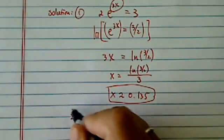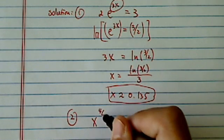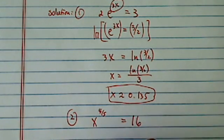Second one, we have x to the four fifths equals 16. The easiest way to do this one is really take 5 over 4 on both sides,